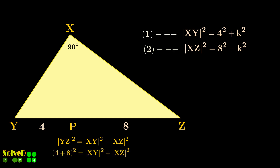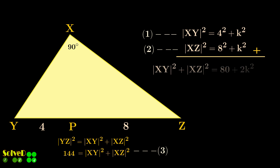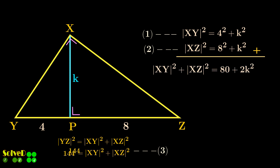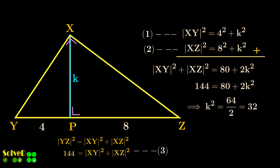Let's label these equations. Now add the first two equations, use the third equation, and simplify to obtain the value of K, as shown.